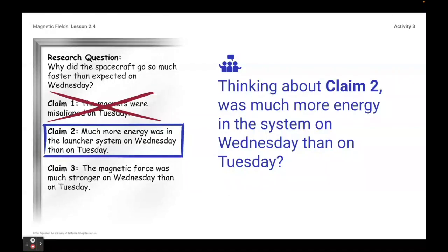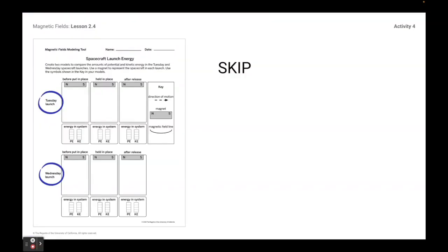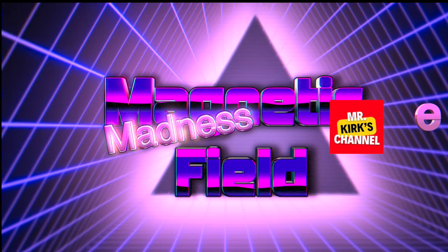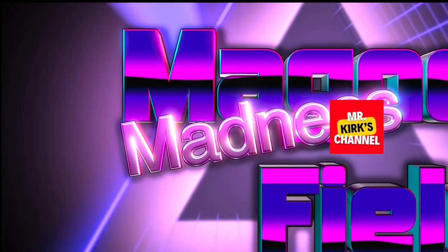Work through that and answer those questions. We're not doing activity four at all — you're just going to use the sim to help you answer all those questions and gather evidence on whether claim two is viable or not. Then you'll turn it in. We'll see you next time.